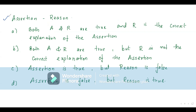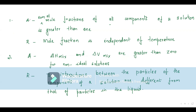All of these are previous questions. Assertion-reason questions were introduced from 2021 in our syllabus, so you will not find many previous questions under assertion-reason. I am giving about 5 questions explaining what assertion-reason is. There are two statements: A for assertion, R for reason. You will have to read the statements. Let us read the first one.